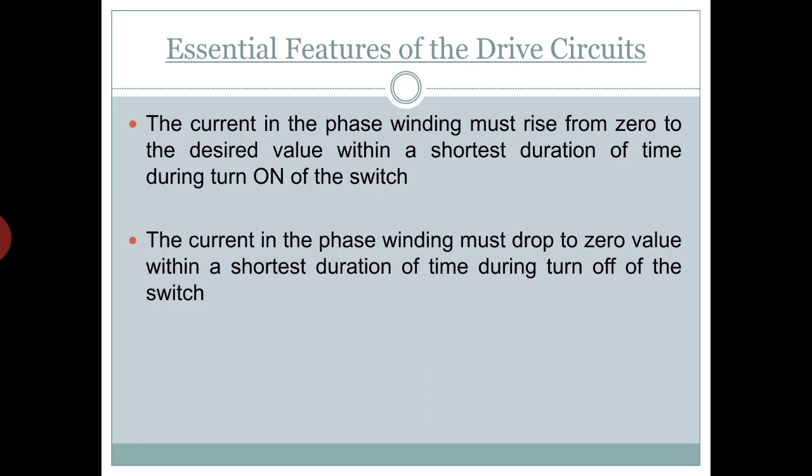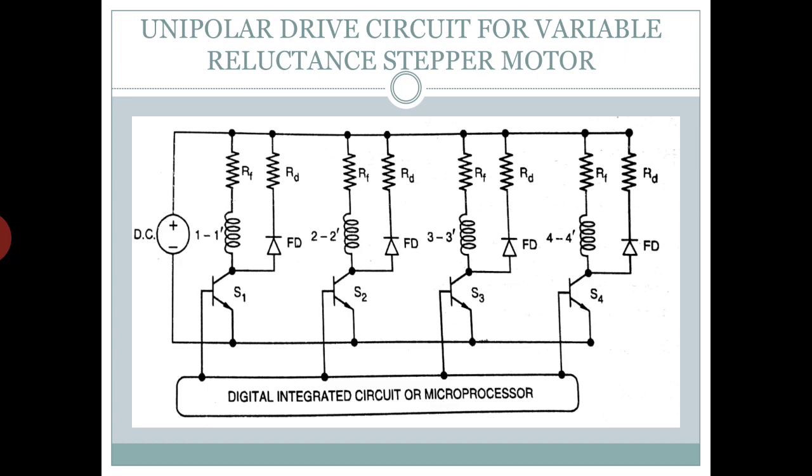The drive circuits must possess the following features for obtaining optimum torque output from a stepper motor. First, the current in the phase winding must rise from zero to the desired value within the shortest duration of time during turning on the switch. Second, the current in the phase winding must drop to zero within the shortest duration of time during turning off the switch. The choice of drive circuit depends on the step angle, power rating of the stepper motor, and the requirement of returning inductive energy stored in the winding back to the DC supply.